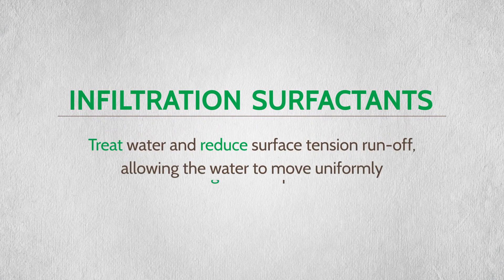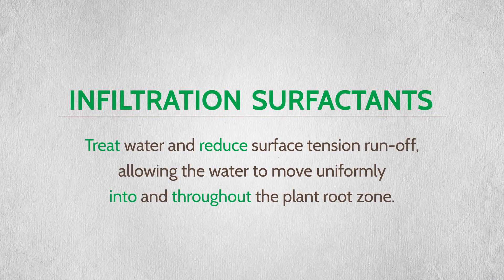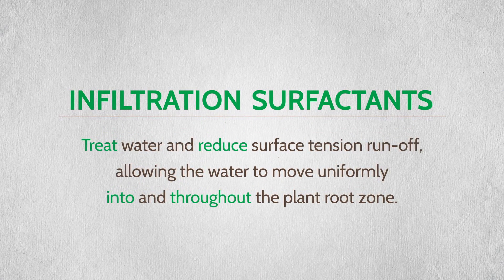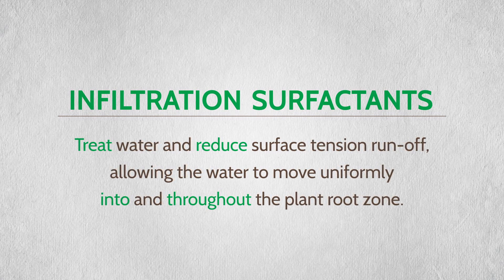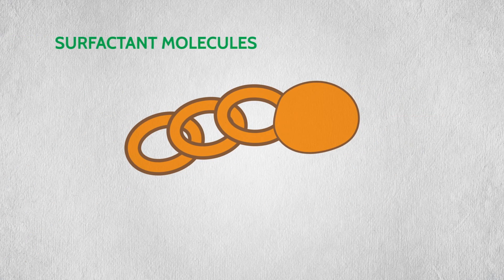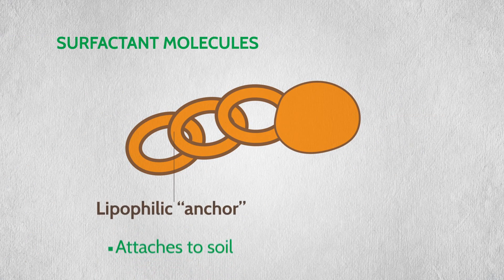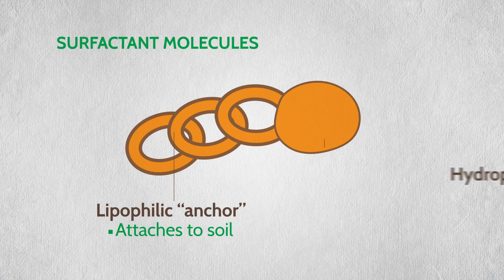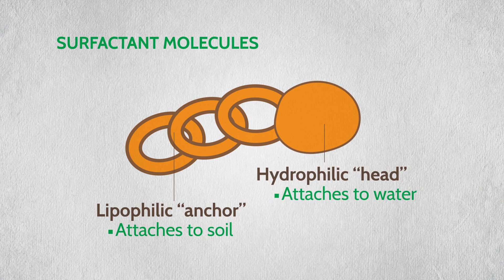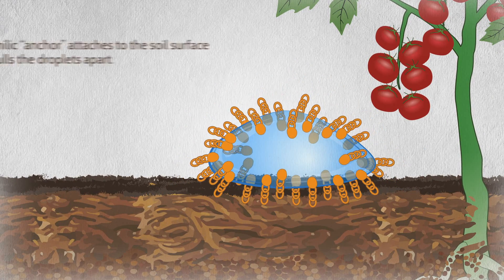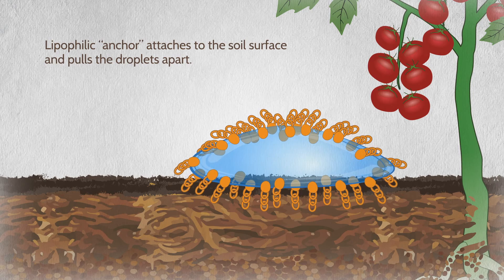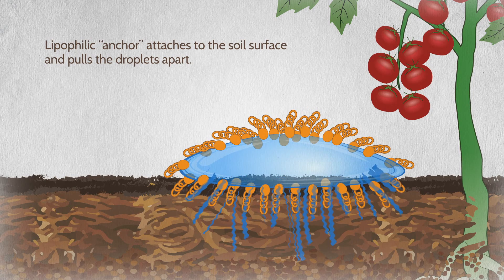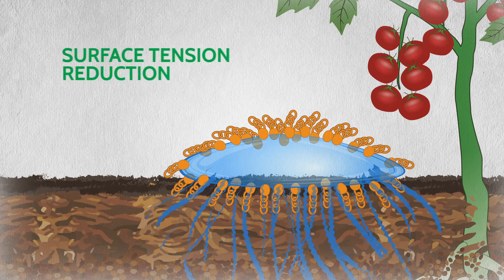Infiltration surfactants treat water and reduce surface tension and runoff, allowing the water to move uniformly into and throughout the plant root zone. Infiltration surfactant molecules have a less lipophilic anchor, which attaches to soil, and more hydrophilic head, which attaches to water. When water treated with an infiltration surfactant is applied to the soil, the lipophilic anchor attaches to the soil surface and pulls the droplets apart. This is called surface tension reduction.